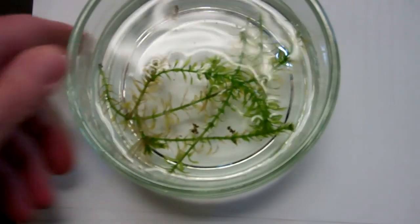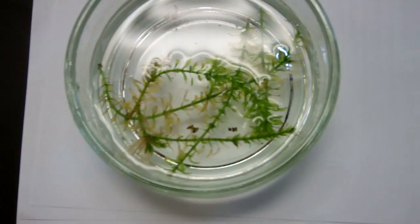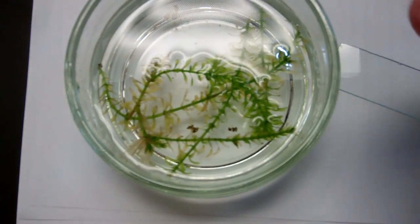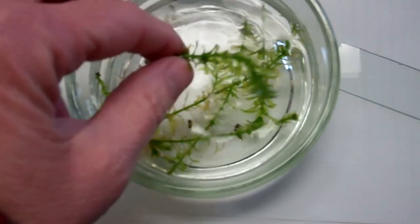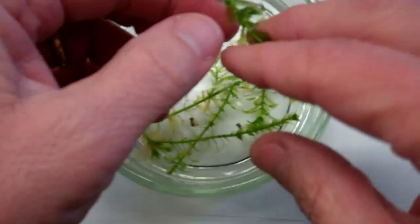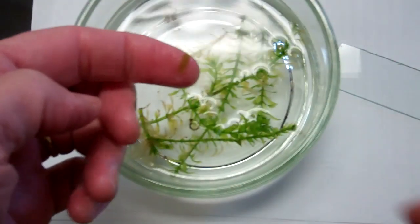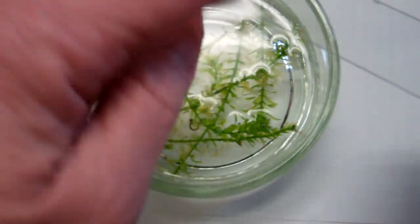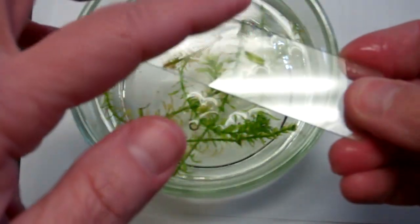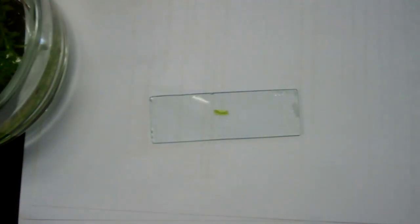So we're going to start with some Elodea, a little water plant, a freshwater plant, and your lab tells you to pluck off a leaf, one little tiny leaf from here, and I'm going to take one little leaflet, put it on my slide, and then I'm going to add a drop of water, tap water.